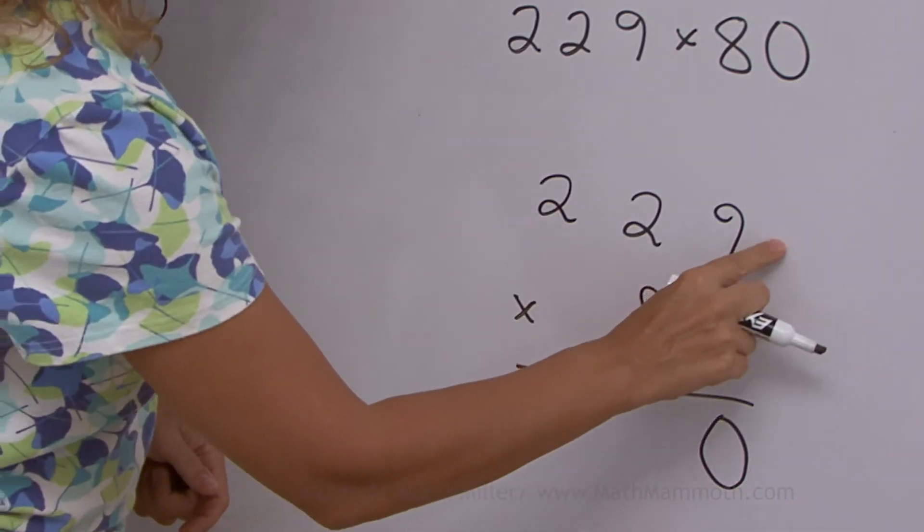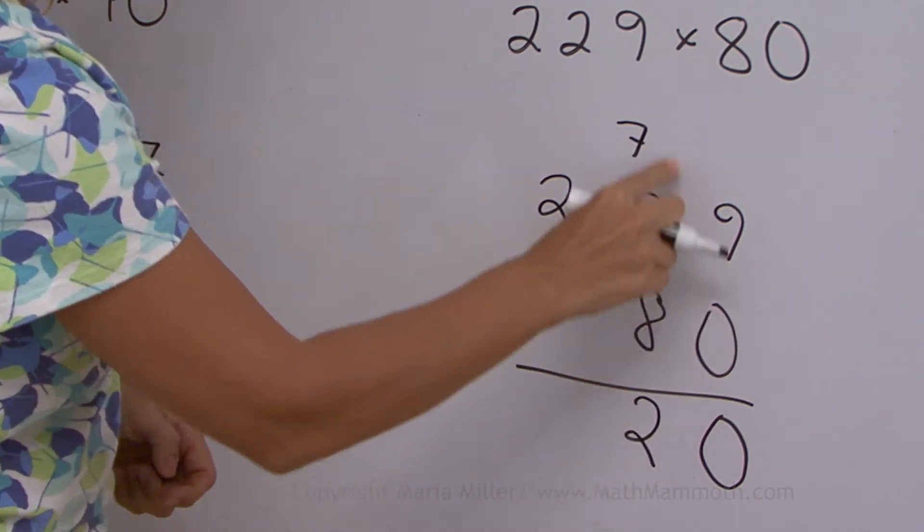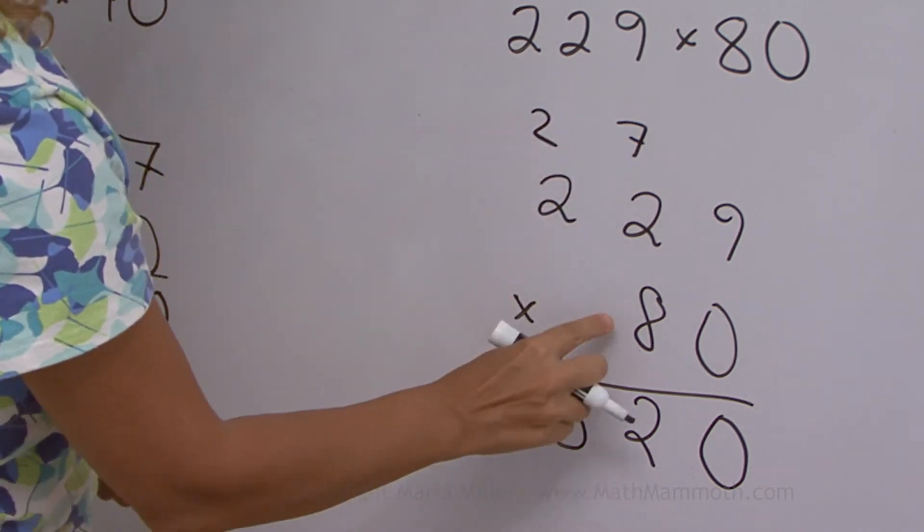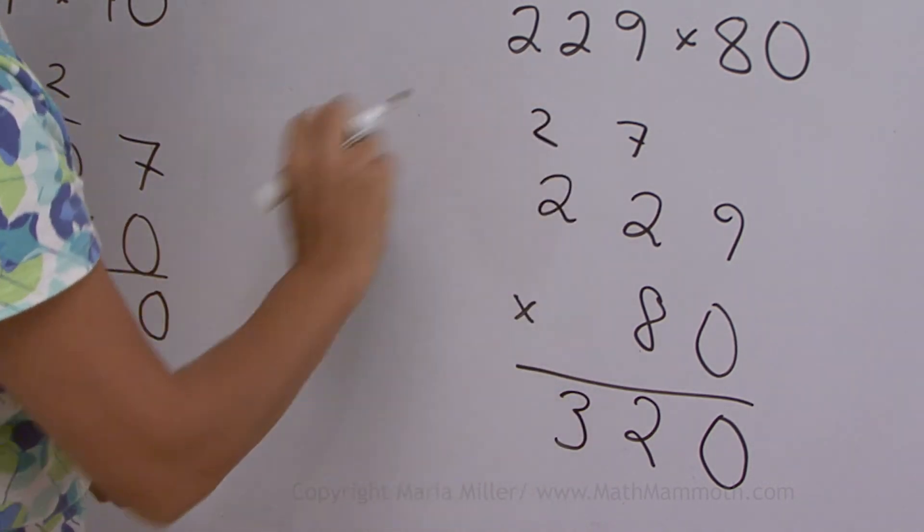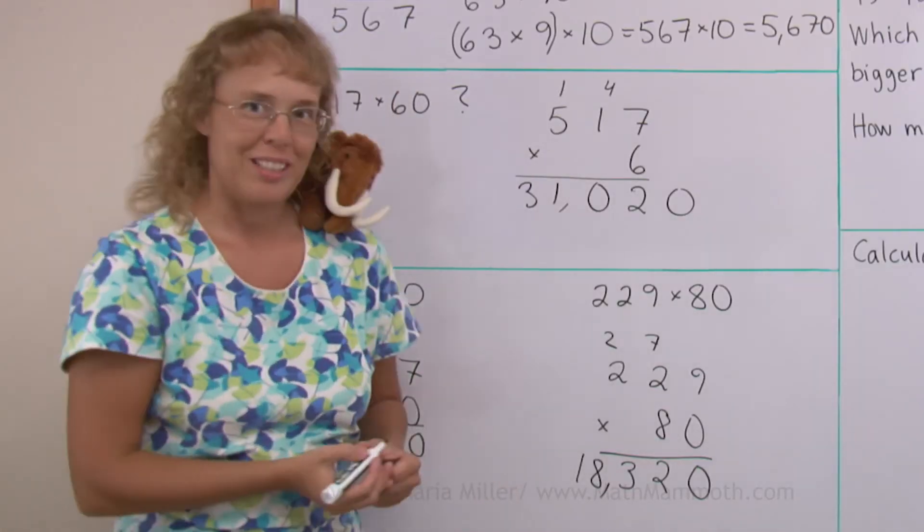8 times 9, 72. 8 times 2 is 16 plus 7, 23. And then 8 times 2 is 16 plus 2, 18. So, 18,320.